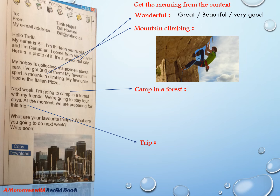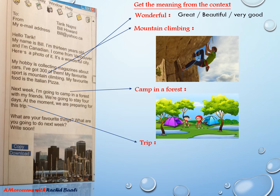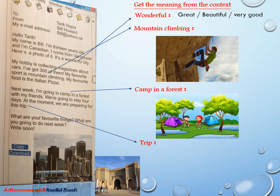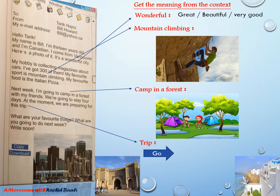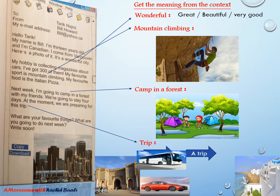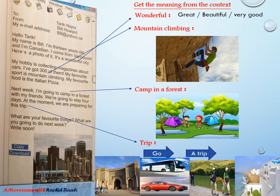Now let's move to 'camp in a forest'. We have 'forest' — everybody knows it. 'Camp', the verb — any idea? Here is a picture showing us to camp in a forest. The last word is 'trip'. Trip is, for example, when you are in one place or one city and you want to go to another city — that's called a trip. People usually do trips by car, by coach, or even on foot if the distance is not that long.